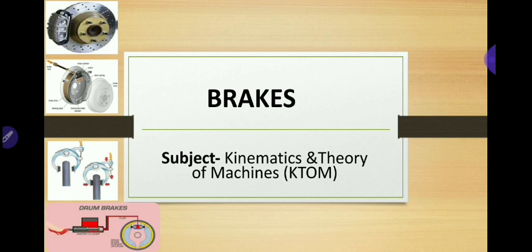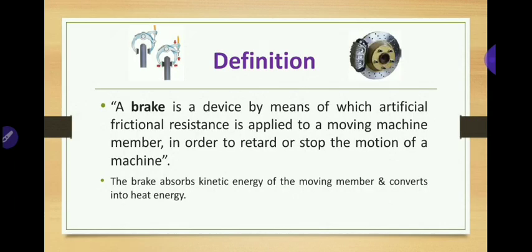Let us start with the definition of brakes. A brake is a device by means of which an artificial frictional resistance is applied to a moving machine member in order to retard or stop the motion of the machine. The frictional member is applied on the rotating body so that we can stop or retard the motion of that rotating body.